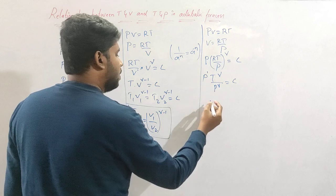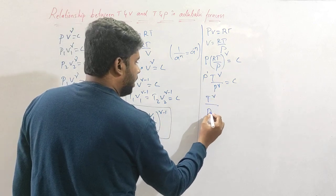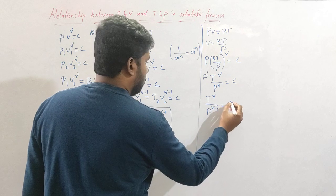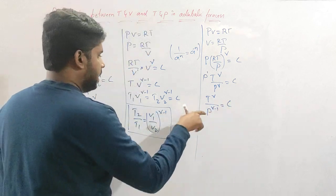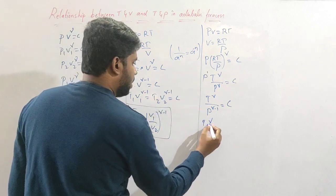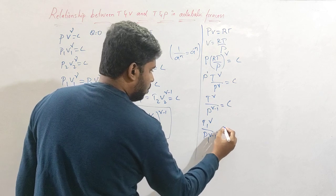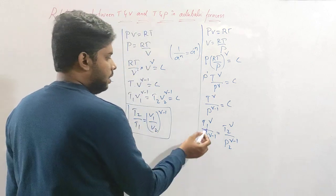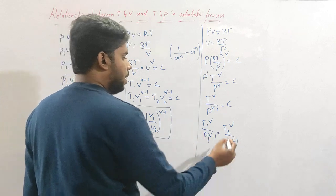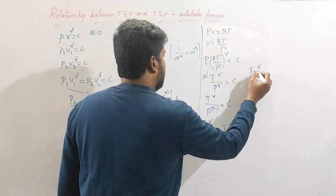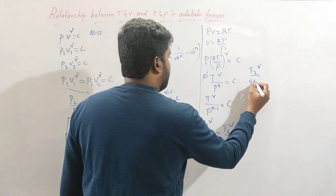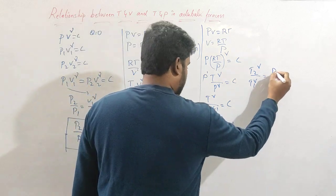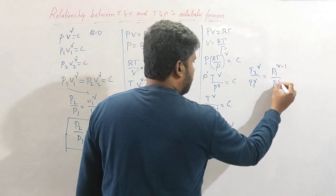Taking P to the denominator, with the exponent: T^γ / P^(γ−1) = constant C. From this I write T₁^γ / P₁^(γ−1) = T₂^γ / P₂^(γ−1). Cross-multiplying, taking terms across: T₂^γ / P₂^γ equals P₁^(γ−1) / P₂^(γ−1), then rearranging with P₂ in the numerator and P₁ in the denominator.